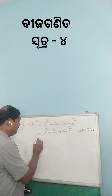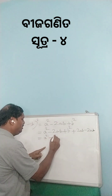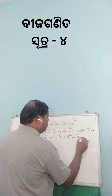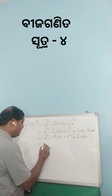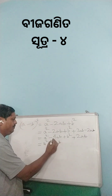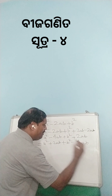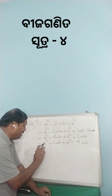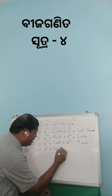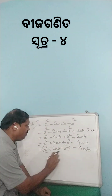A square is equal to A square minus 2AB minus 2AB, that is minus 4AB, plus B square plus 2AB, which equals A square plus 2AB plus B square minus 4AB. So A square plus 2AB plus B square minus 4AB.